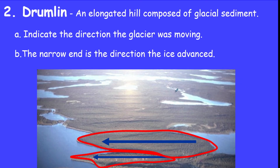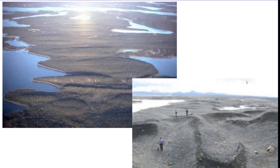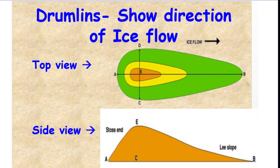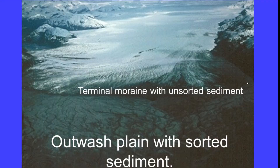Drumlins are a depositional feature caused by a glacier. The only thing you need to know is that they're shaped like a teardrop. The pointy part of the teardrop indicates the direction the glacier was moving. Here are some pictures of drumlins so you can see the teardrop shape — that one would be moving east. And here's your outwash plain — the sorted sediment at the end of a glacier.